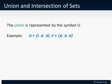Let's take a look at an example. If the set D contains the terms 1, 2, and 3, and the set F contains 2, 3, and 4, then the union of D and F contains 1, 2, 3, and 4, because those are all the terms that are in either one, or the other, or both.